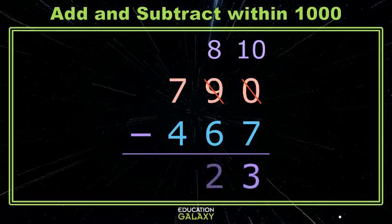6 tens away from 8 tens, which gives us 2 tens. And lastly, we take 4 hundreds away from 7 hundreds, which leaves us with 3.